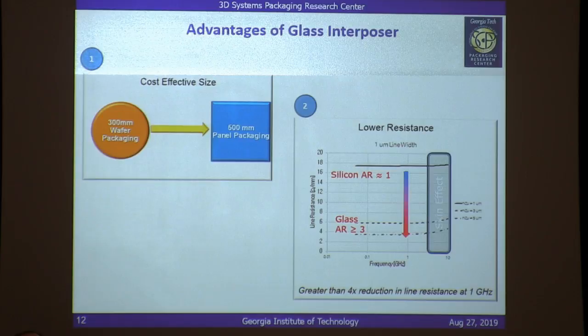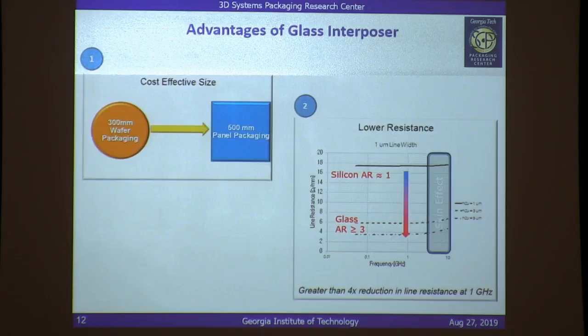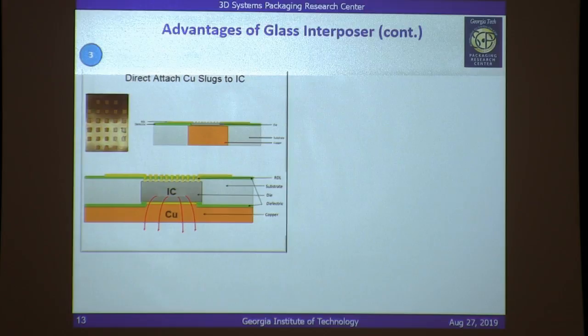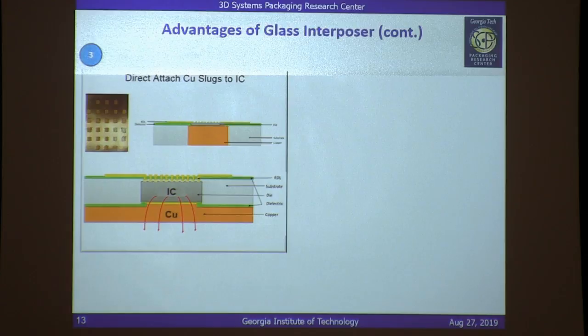Second, you're not limited in terms of aspect ratio for the interconnects you build — very tall structures allow you to reduce resistance quite a bit, enabling transmission of bits at very high speed. Third, you can do a direct attach of copper slugs to the IC. For smartphone applications where thickness is critical, you take an IC, thin it, and embed it — fan-out panel level packaging — without introducing parasitics, while also exposing the backside of the IC to attach copper slugs for heat removal.